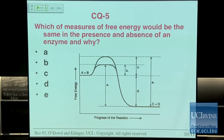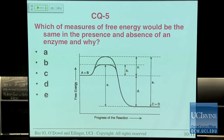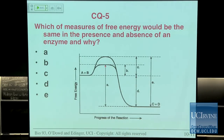Which measure of free energy in this diagram would be the same in the presence and absence of an enzyme, and why? The majority answered correctly: D, which is the overall delta G of the reaction. That doesn't change in the presence or absence of an enzyme because it occurs below the activation energy line. An enzyme decreases the activation energy — that changes A, B, C, and E — but it won't change D.